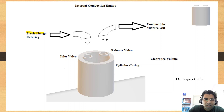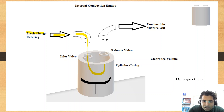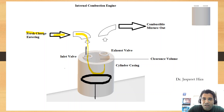Here you can see the fresh charge. This fresh charge enters from the intake port and accumulates inside the cylinder. Now, very importantly, we have a piston. Whenever the charge comes through the inlet valve — when there is an opening in the inlet valve — this fresh charge enters and accumulates inside the cylinder.